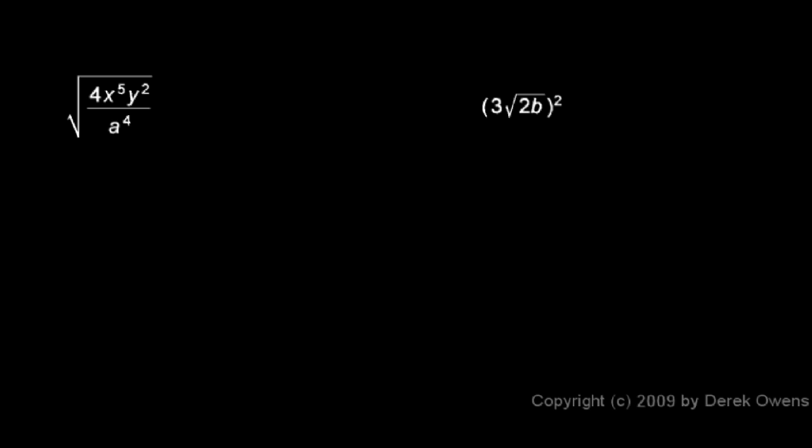Here we have the square root of 4x to the fifth y squared over a to the fourth. Well, immediately we can take some perfect squares out from under the radical.